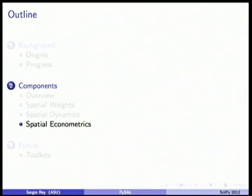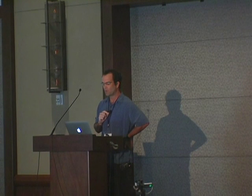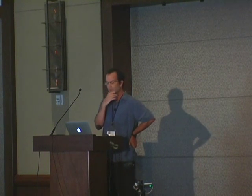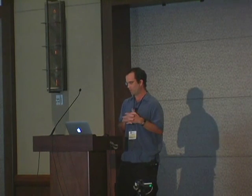For the rest of my time, I want to focus on the spatial econometrics module, because this is probably what we get the most requests for from social scientists. There's a lot of interest in applying spatially explicit econometric methods, and even remote sensing people are contacting us. However, in commercial software this is still pretty rare — only STATA has some limited functionality. The coverage is much better in the open source world, which speaks to the power of open source.